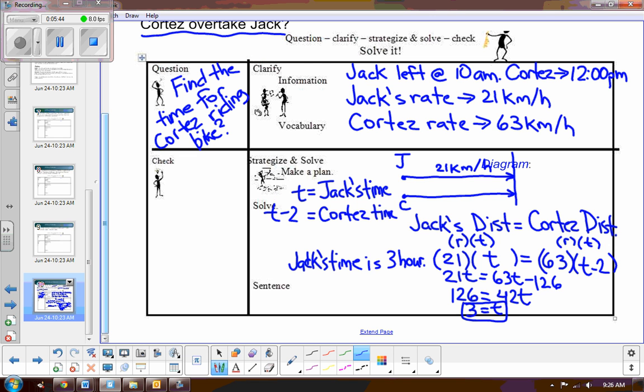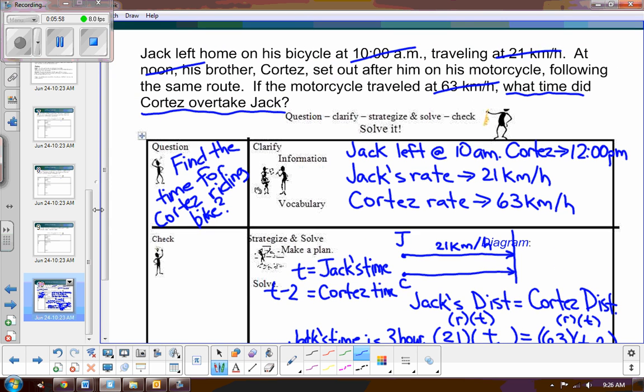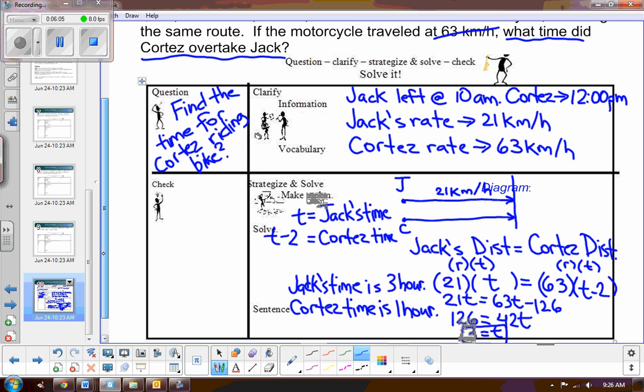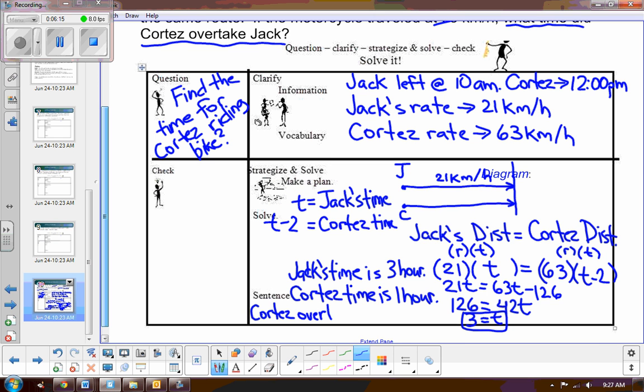So Cortez time is two hours less. So is one hour. So he spent one hour on his motorcycle. Now let's make sure we answer the question. The question was, what time did Cortez overtake Jack? Well, Cortez left the house at noon, and he spent an hour on the bike. So then Cortez caught up with Jack. So Cortez overtook Jack at 1 p.m.